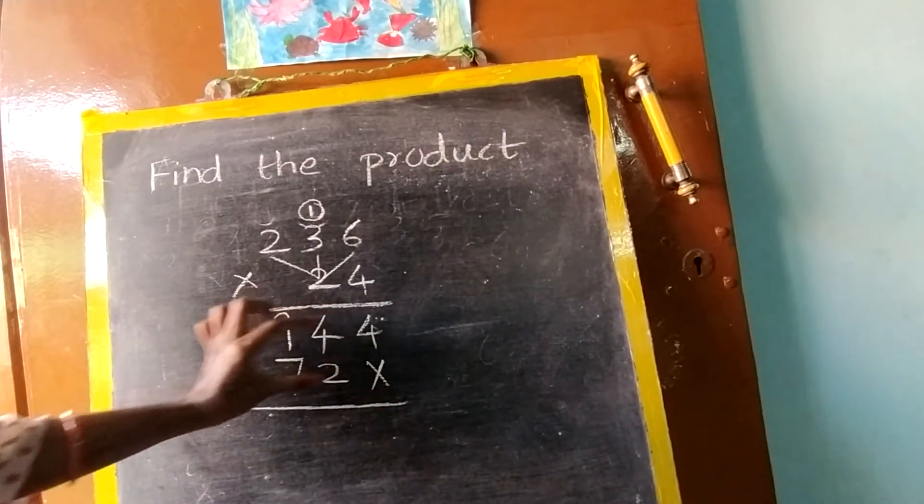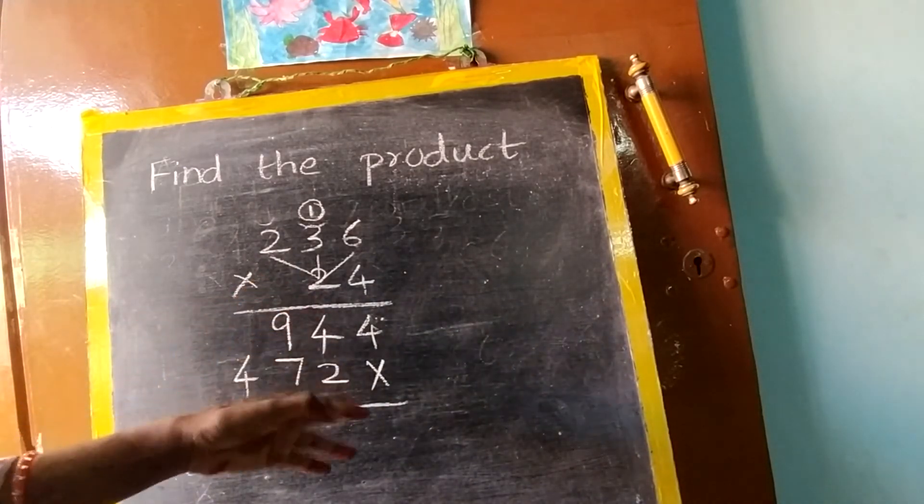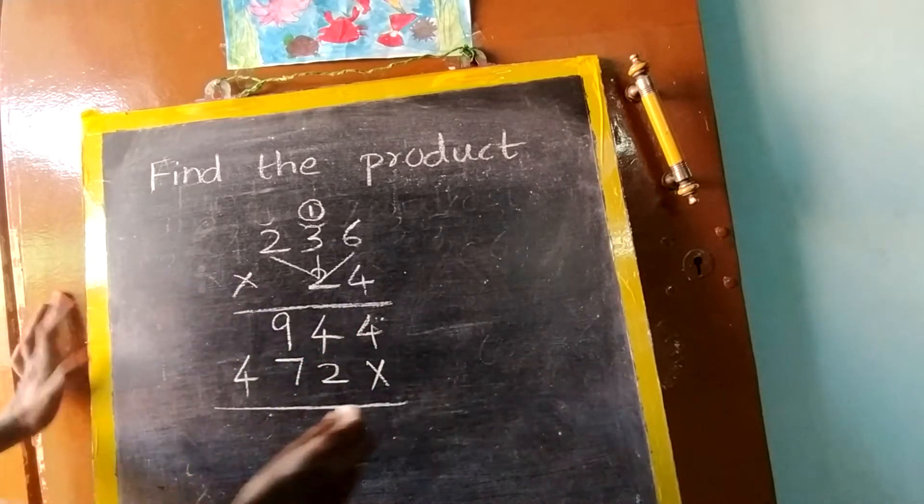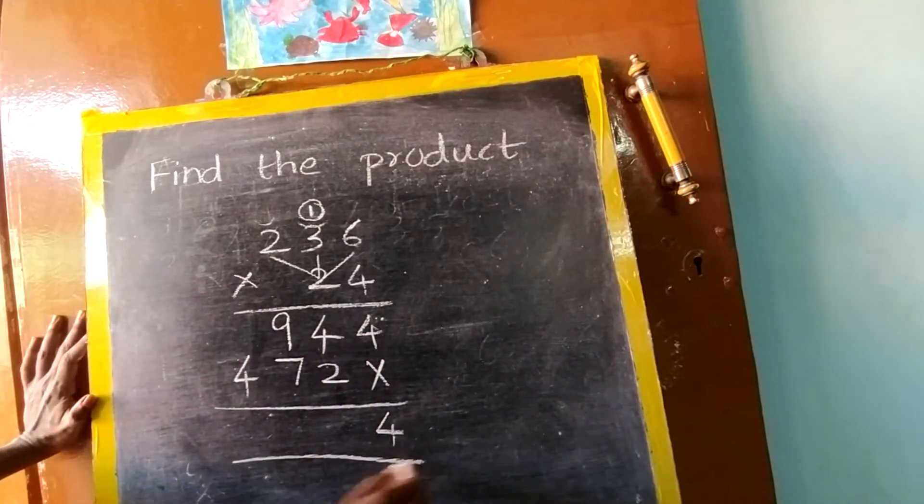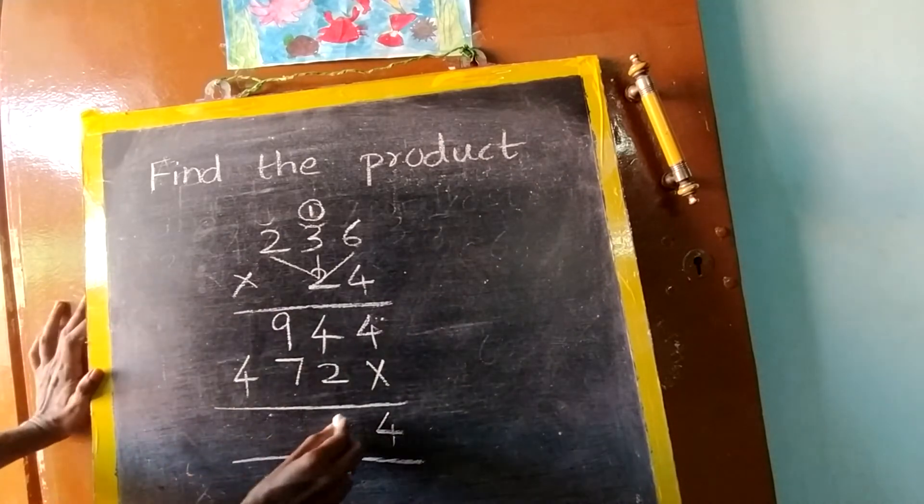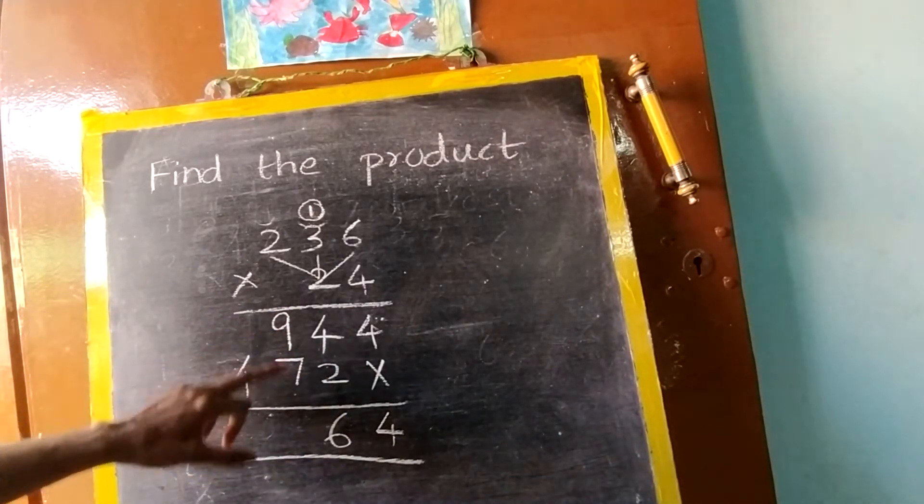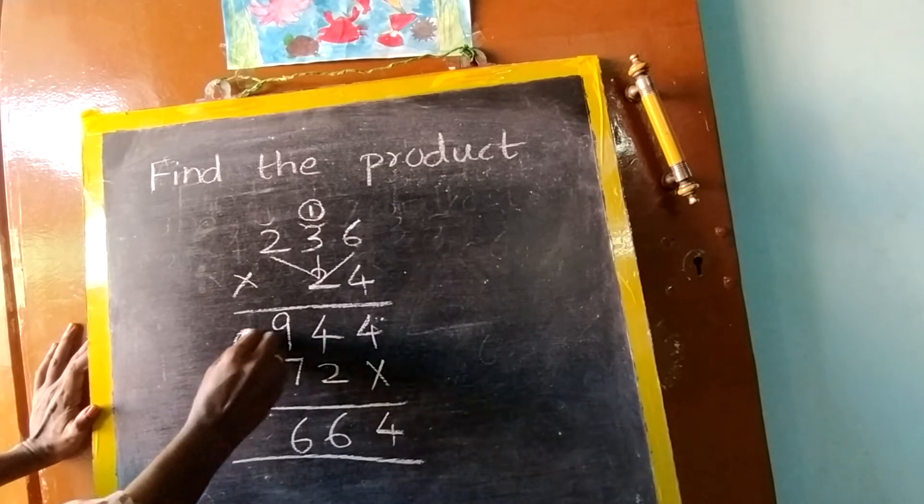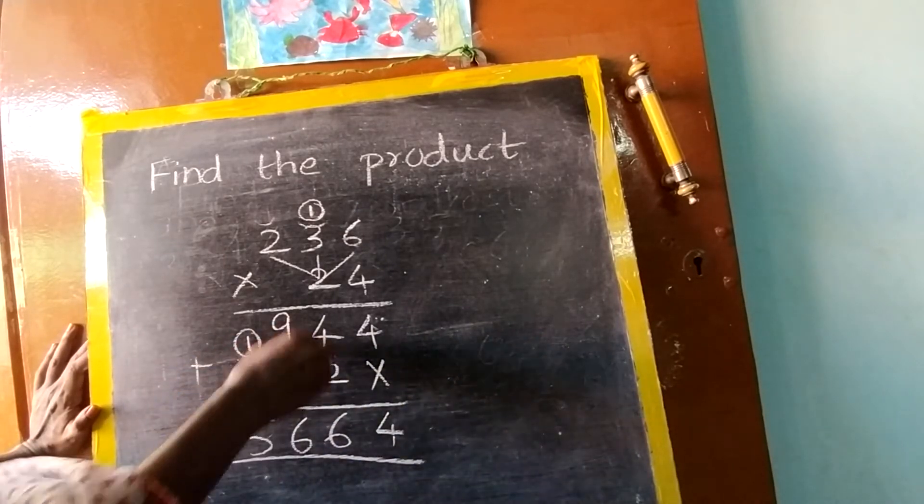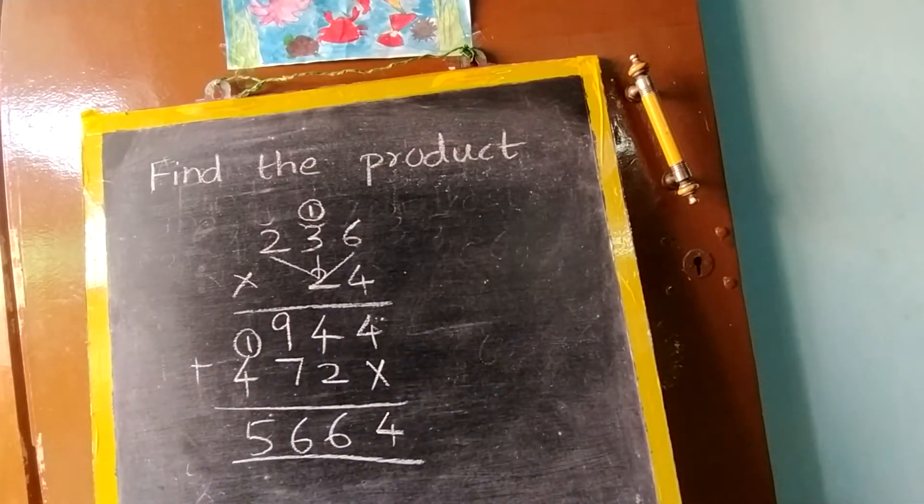Here when you write, you have to write big numbers and you have to leave gap. Now add this 4 into cross, that is 4. Now 4 plus 2, 6. 9 plus 7, 16. So this is actually addition only. This is very easy for you.